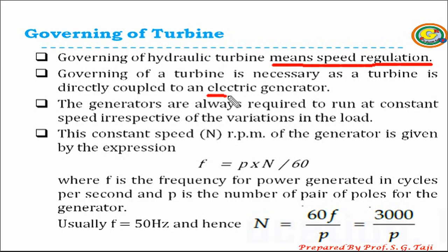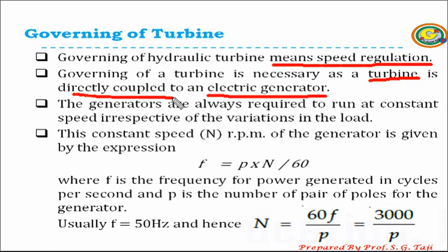As we know, electric generators are generally directly coupled to the main shaft of the turbine. So whenever we are generating mechanical energy using hydraulic energy through the turbine, it will get directly transferred to the electric generator by means of the shaft, where it will be further converted into electric energy. Now, whatever load is coming on the generator is going to vary over time.